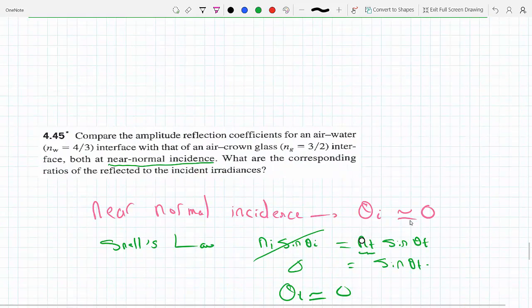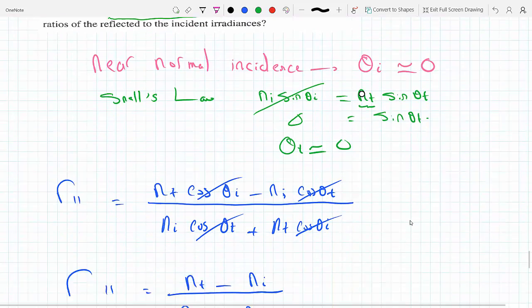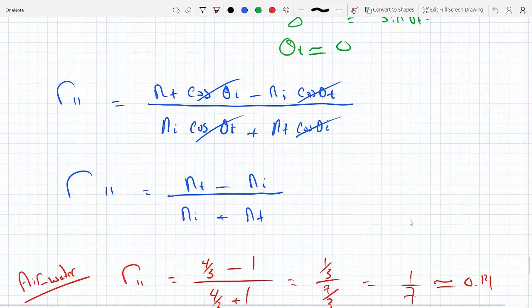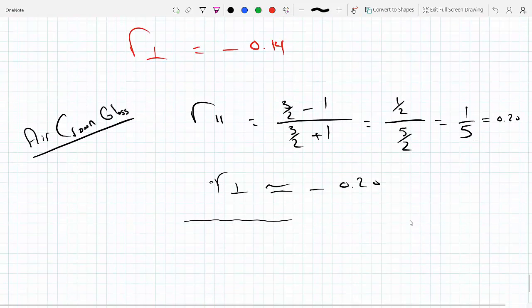The second part of the question is: what are the corresponding ratios of the reflected to the incident irradiances? Now again, this is one of the equations dealing with the irradiances.